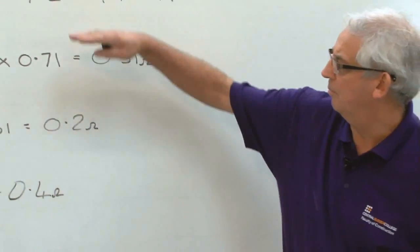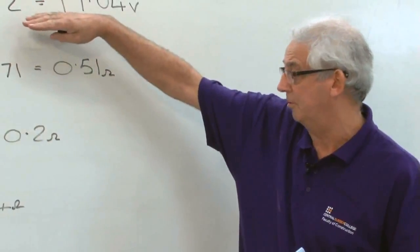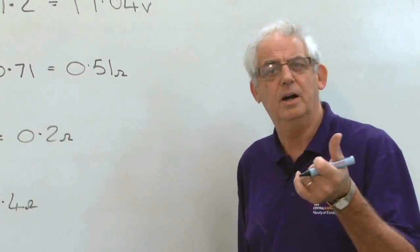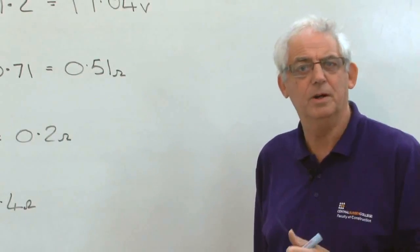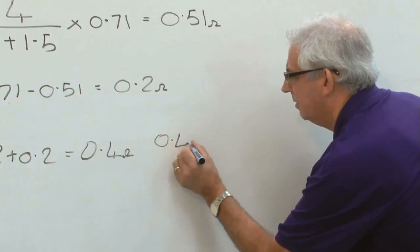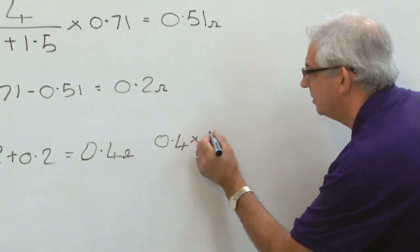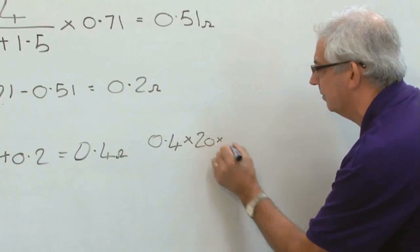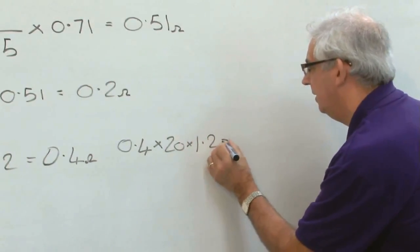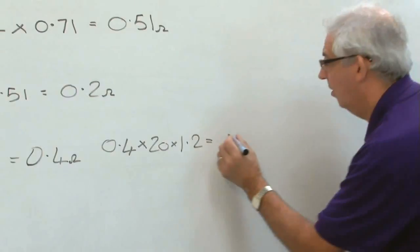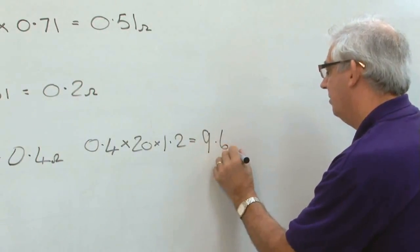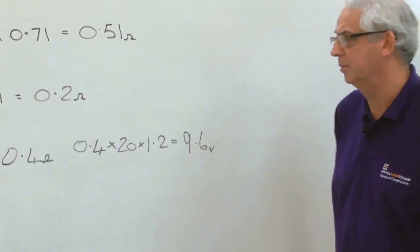Now I can revert back to my old calculation or my first calculation using 0.4 because I've now got Rn plus R1. 0.4 times 20 the rating of the protective device times 1.2 gives me a value of 9.6 volts which is perfectly acceptable.